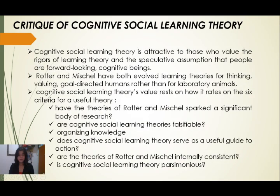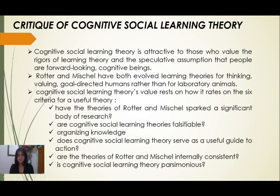The critique of Cognitive Social Learning Theory notes that it is attractive to those who value learning theory and the assumption that people are forward-looking cognitive beings. Rotter and Mischel have both evolved learning theories for thinking, valuing, goal-directed humans rather than laboratory animals. Cognitive Social Learning Theory's value rests on how it addresses six criteria for a useful theory. The first criterion asks: have the theories of Rotter and Mischel sparked a significant body of research?